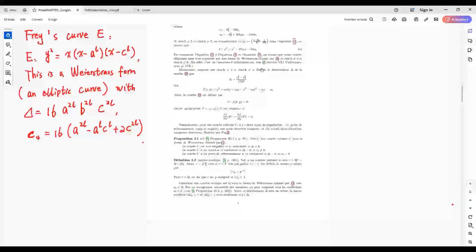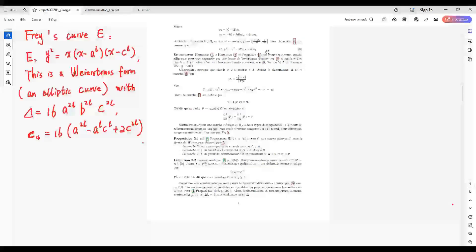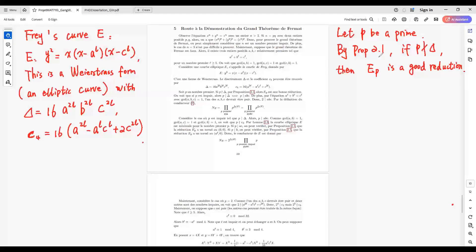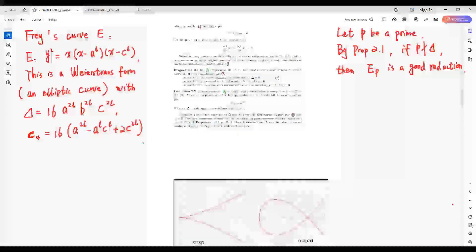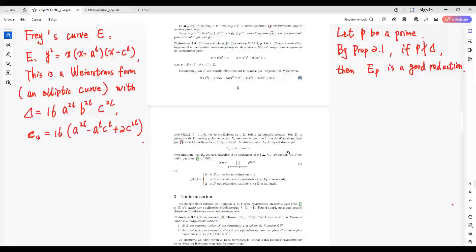Where delta can be calculated by this one and C4 can be obtained by this one. Let P be a prime number. By Proposition 2.1 and the definition of the reduction of E modulo P, E_P.